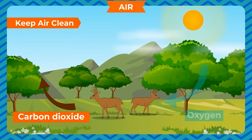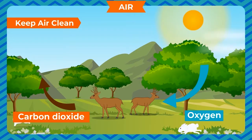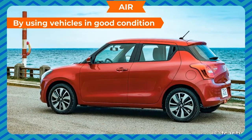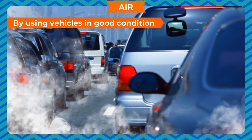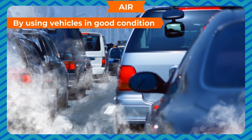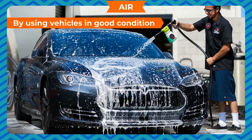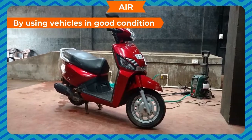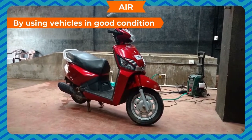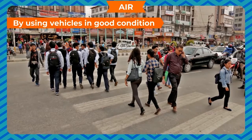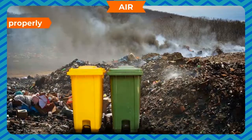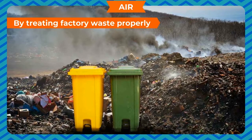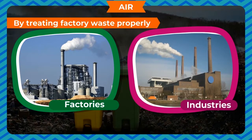To keep air clean, planting trees keeps the air clean. Plants use carbon dioxide during photosynthesis and give out oxygen for us to breathe. By using vehicles in good condition, the government has made rules to control pollution caused by vehicles. Vehicle owners have to get their cars or scooters checked regularly. By treating factory waste properly, factories and industries should ensure that harmful components of smoke are removed before releasing them into the atmosphere.